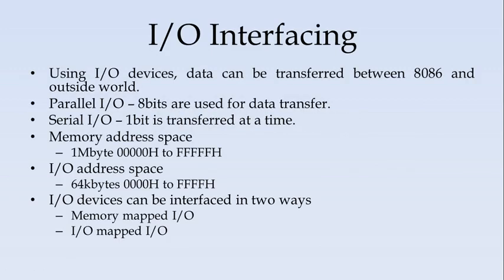Next we will see into the IO interfacing. IO interfacing through which the data is transferred between 8086 and the outside world. If 8 bits are transferred simultaneously then it is a parallel IO. If it is 1 bit transferred at a time then it is serial IO. If we take the memory address space we have 20 address lines contributing to 1 megabyte. The address space is 0000H to FFFFH. The address space for IO is only 16 bits. The IO devices can be interface to 8086 in 2 ways. It can be either memory mapped IO or IO mapped IO.